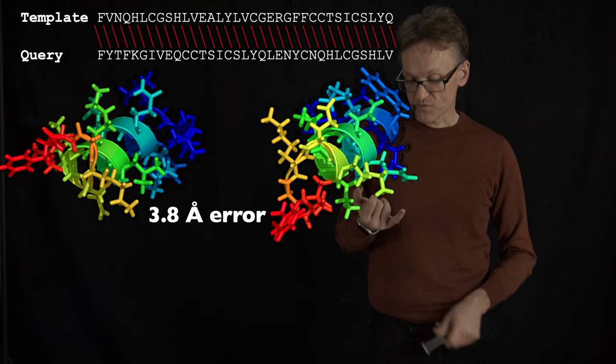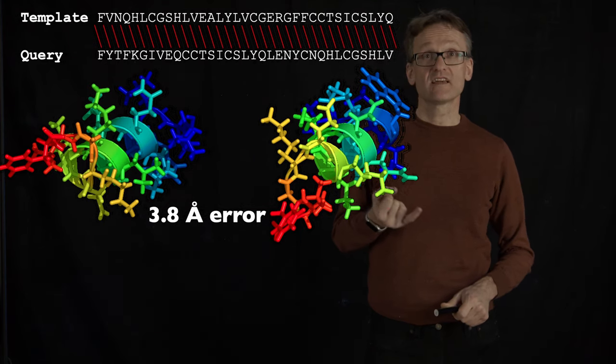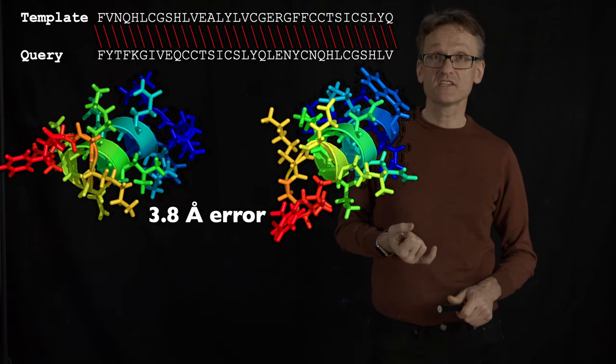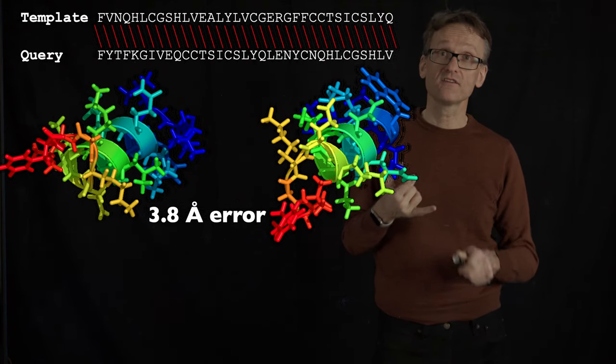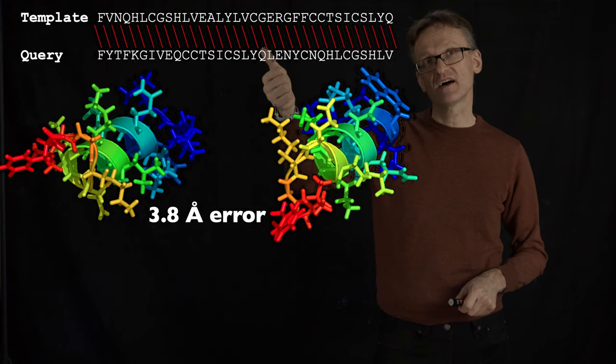This stresses another part with homology modeling. We need something that is close to us. The higher the sequence, even if we know that two sequences are homologous, the higher the sequence identity, the better I will be able to align them.